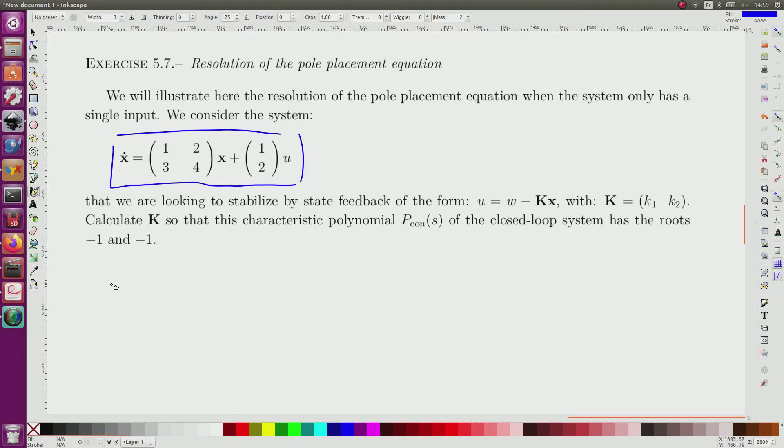I find a controller U equal W minus Kx. W is a new input. X comes from this system and the controller generates U as an input from the system.